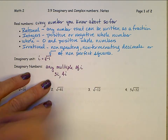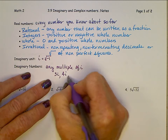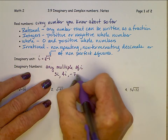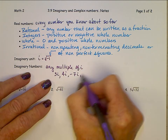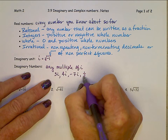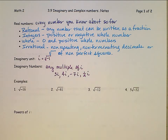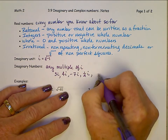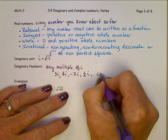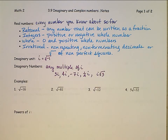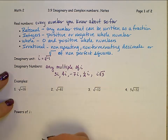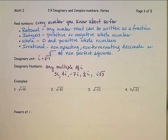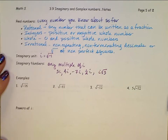Examples of imaginary numbers include 4i, negative 7i, one-half i, and i times the square root of 3. Those are all imaginary numbers — it's some real number times i.